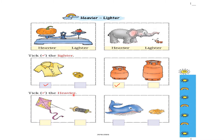Now tick the heavier — we have to find out which is heavier. This is a kite and this is a bundle of thread. The kite seems to be big when you compare it with thread, but the kite is very lightweight. That is the reason the bundle of thread is heavier when you compare it with the kite, so I am going to put a tick mark for the bundle of thread.